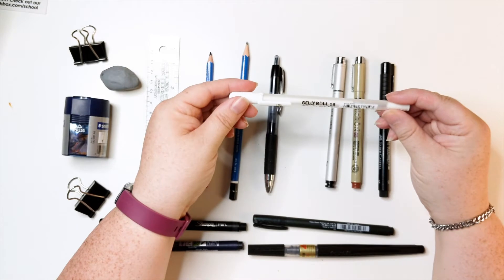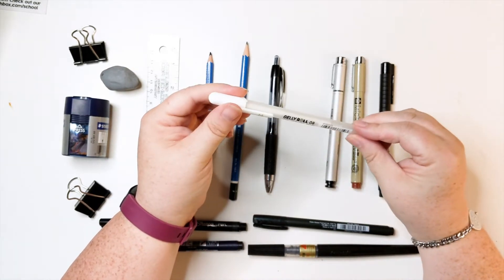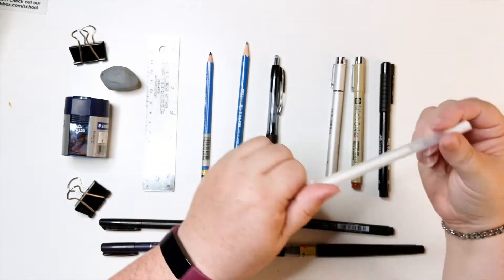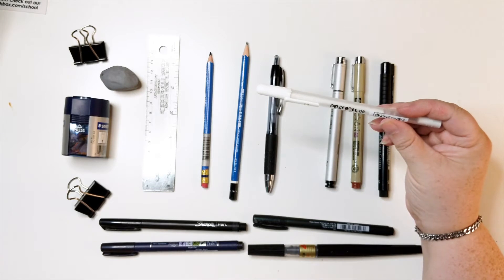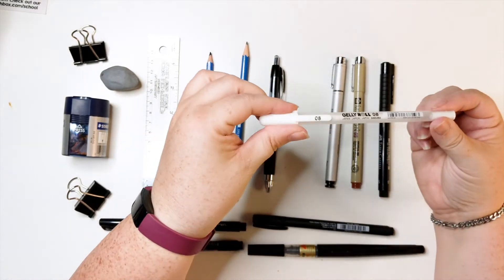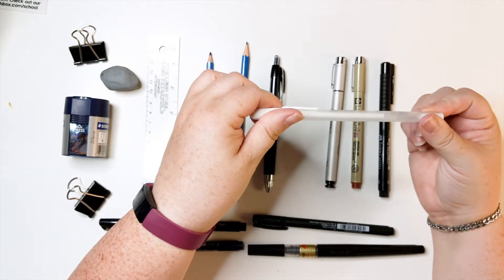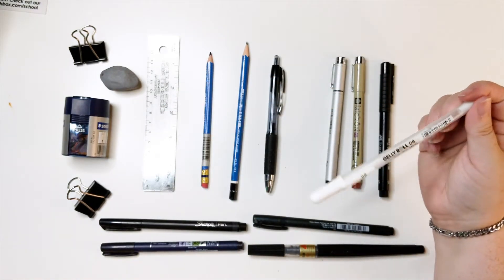This is a white jelly roll. You get these off of Amazon and a pack of three usually, and all the links will be down below for all the things that I'm mentioning in here. These are good for making white highlights on, or highlights that you've lost on watercolor or ink.